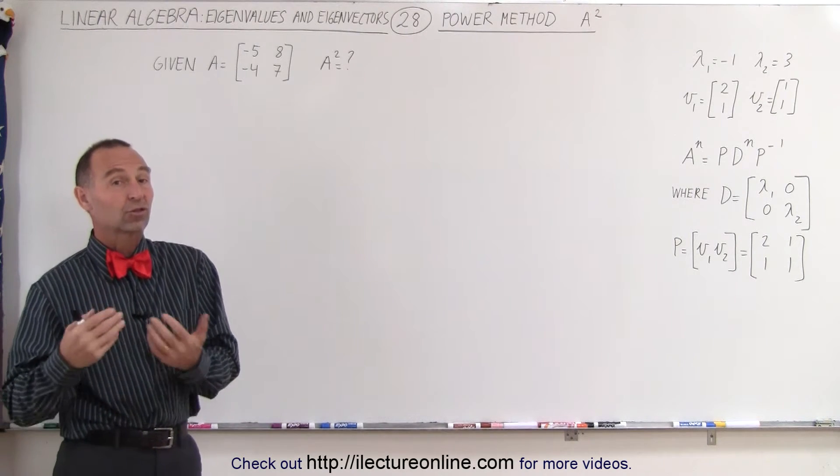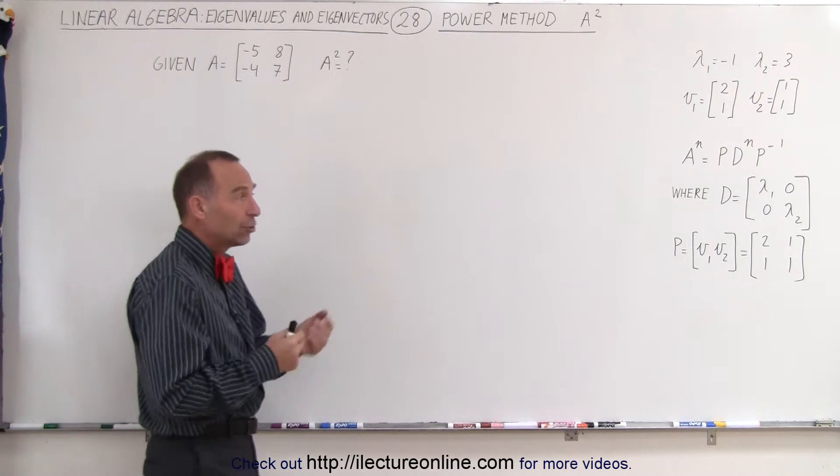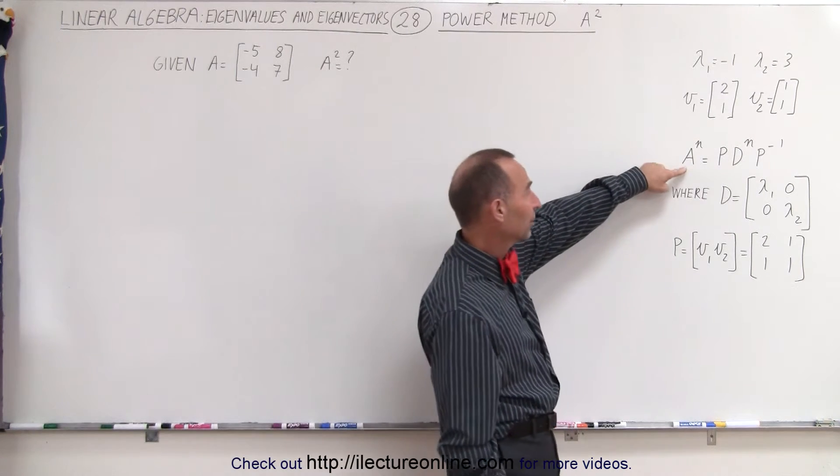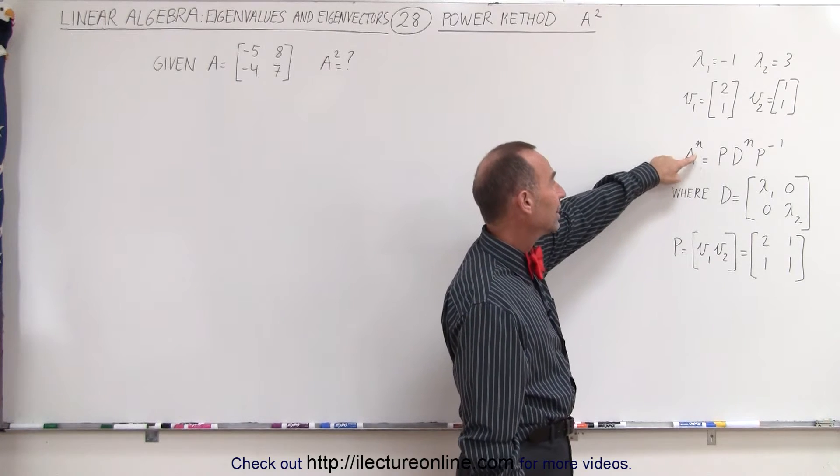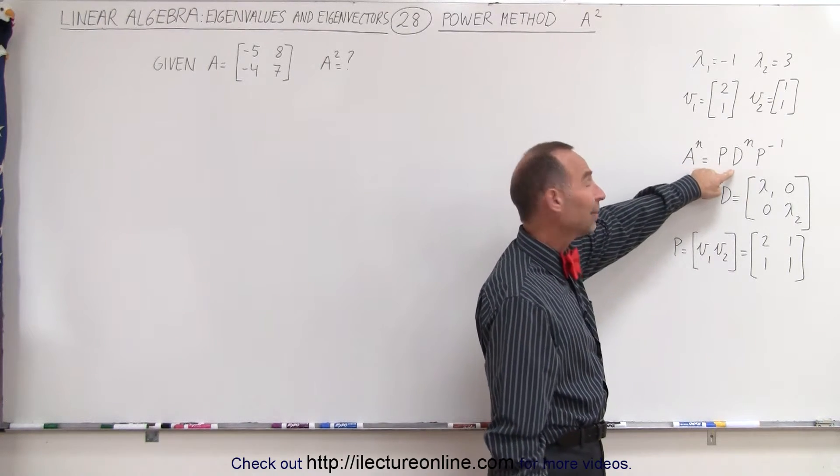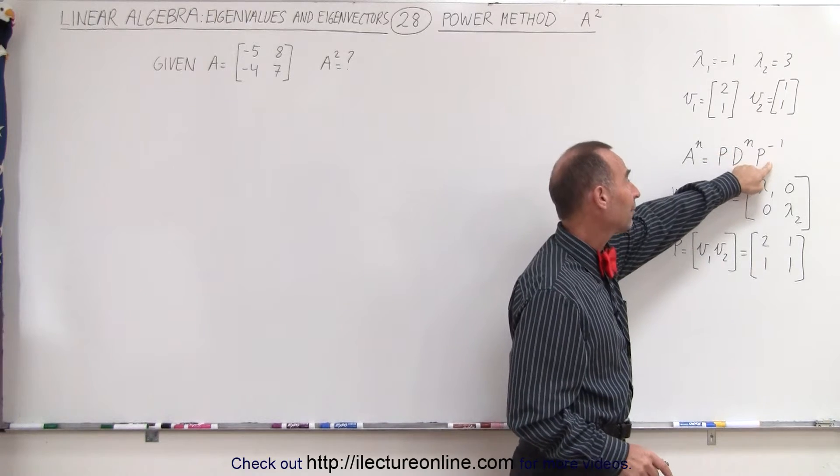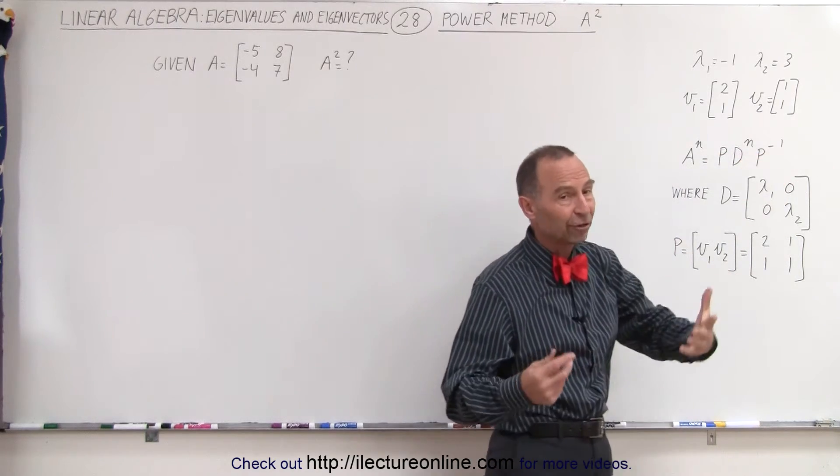Not just the matrix squared, but the matrix to any power. And the equation to do that, given a particular matrix, is that A to the N is equal to P times the diagonalization matrix to the N power times P to the minus 1, or the inverse of P.